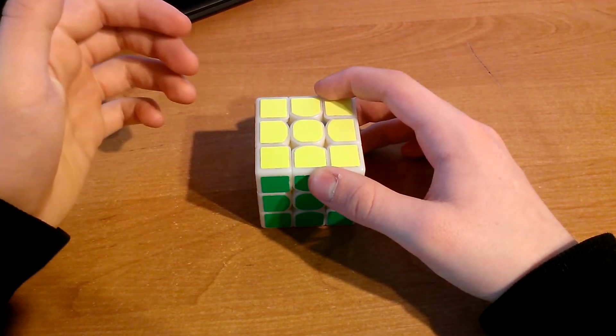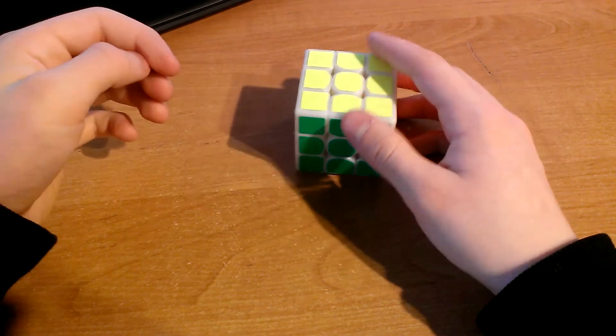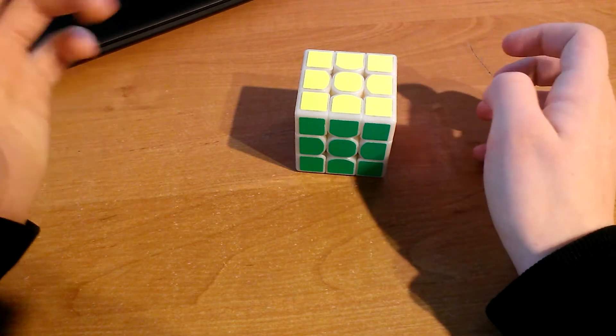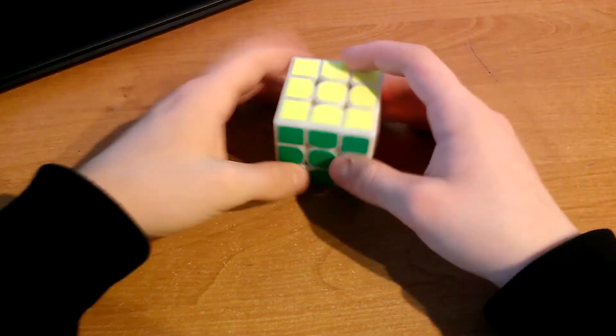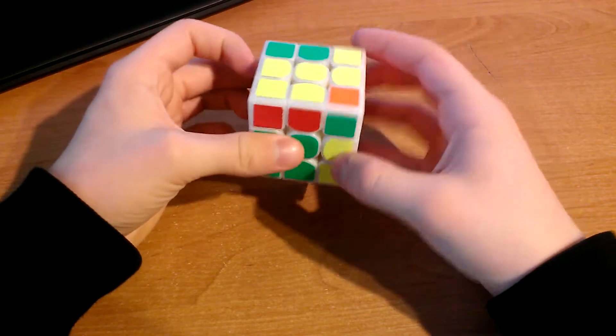Another thing is use EO because OLL should be used very wisely. You shouldn't ever get a dot case. You should know how to do sledge and you should know how to do this thing.